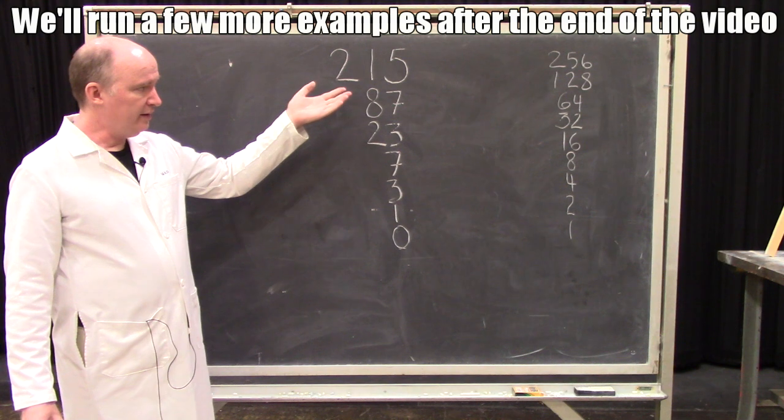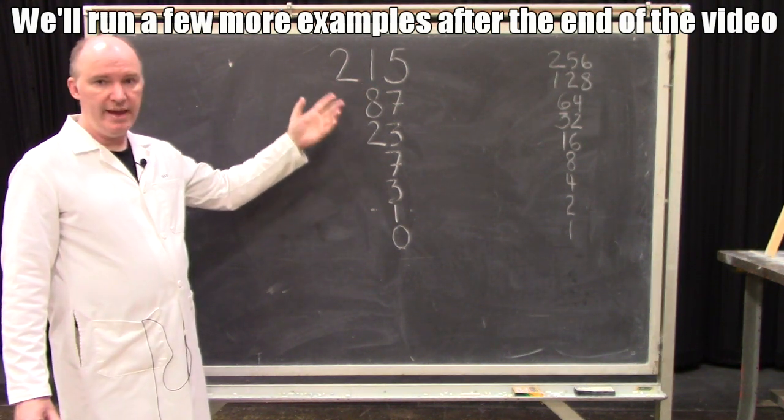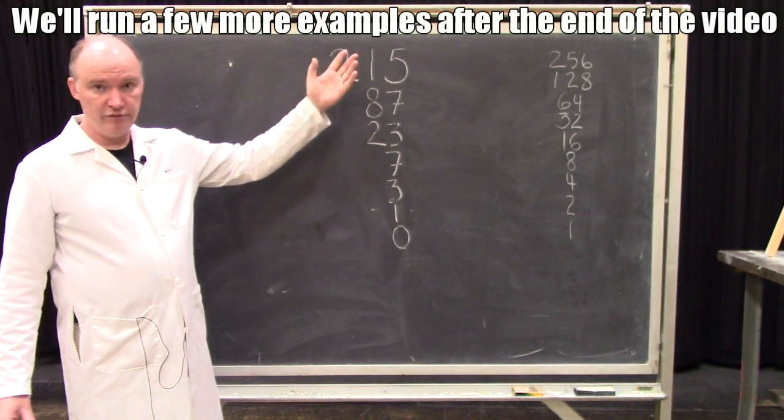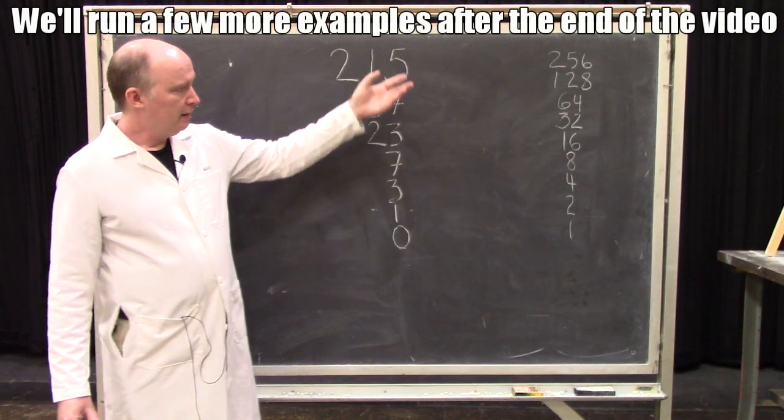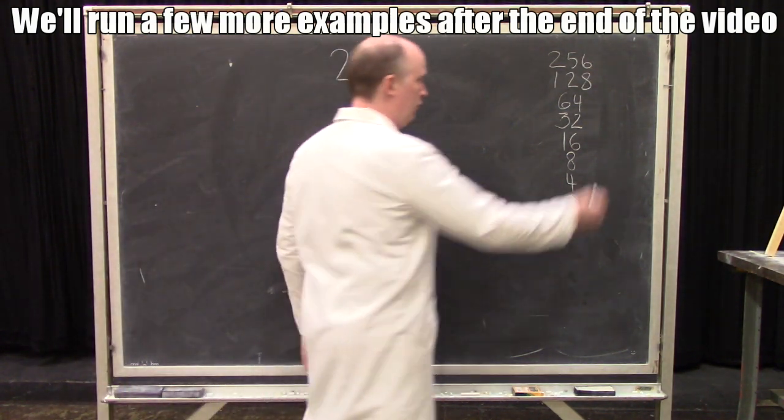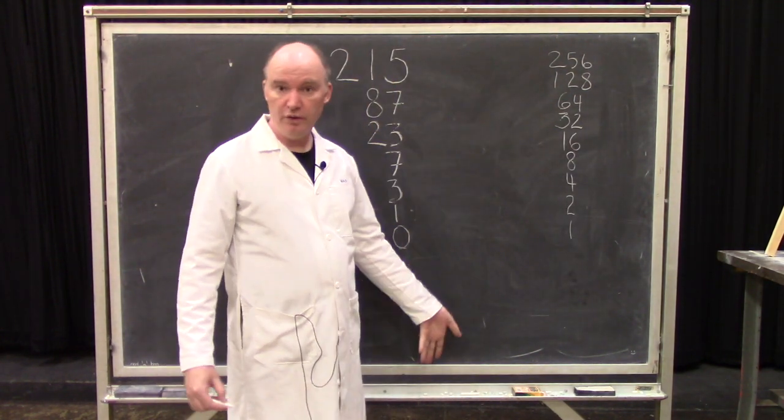And you can repeat this for whatever number you've got. Just if you can subtract it, do so, put a 1 there. If you can't, put a 0. If, for example, like let's say you were converting 256 to binary, 256 minus 256 is 0, so you would just put a 1 in your 256 place and then 0s for all the rest of them.